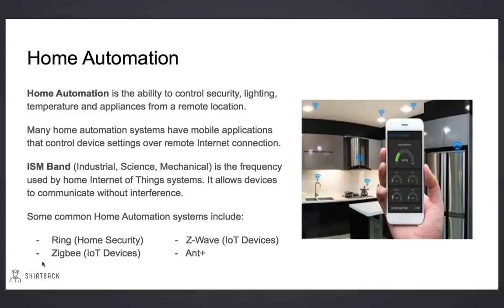Home automation is the ability to control all of our security, lighting, and appliances from a remote location. Many home automation systems have mobile applications that can control settings over remote internet connections. Home automation uses what's called the ISM band. ISM stands for Industrial, Science, and Mechanical. It's a lower frequency that's used by home systems with Internet of Things devices. Using the lower frequency ISM band allows devices to communicate without interference.